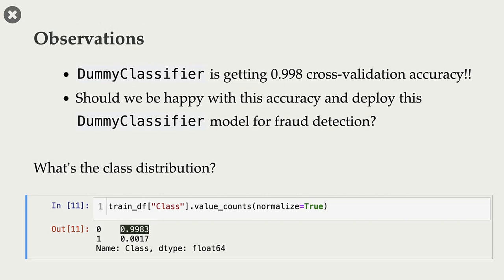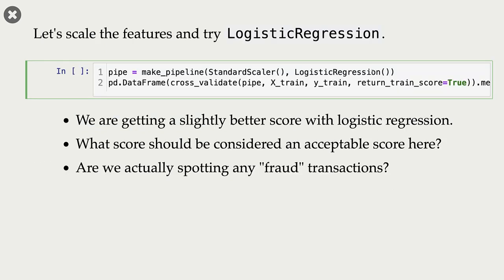Now, that's a problem, right? Because banks are more interested in finding these fraudulent transactions. If there are fraudulent transactions, they don't want the classifier to miss these transactions. So this 99.83% accuracy is kind of misleading here.